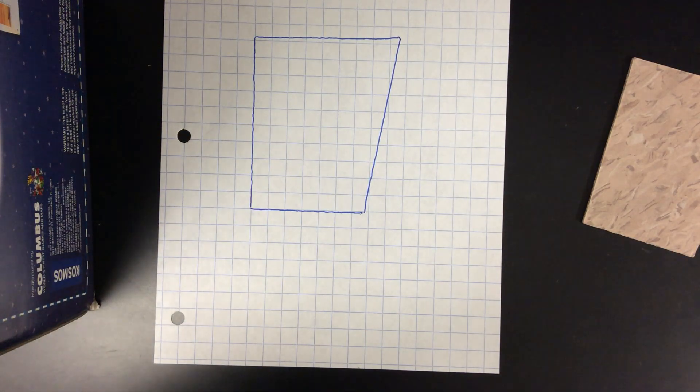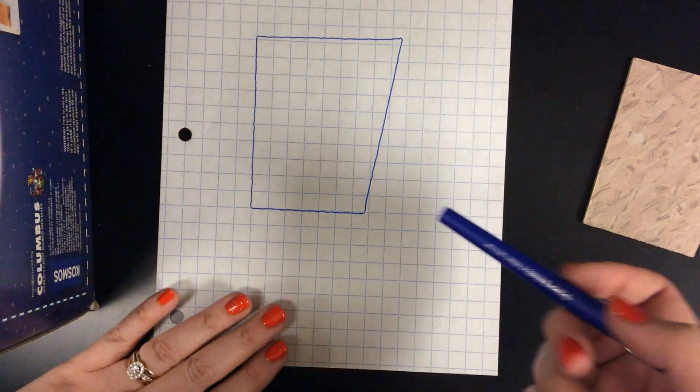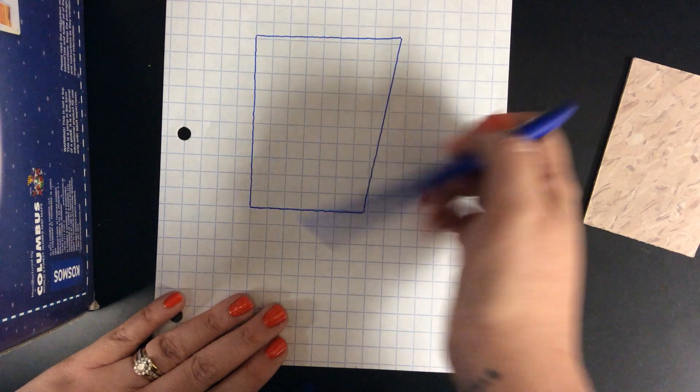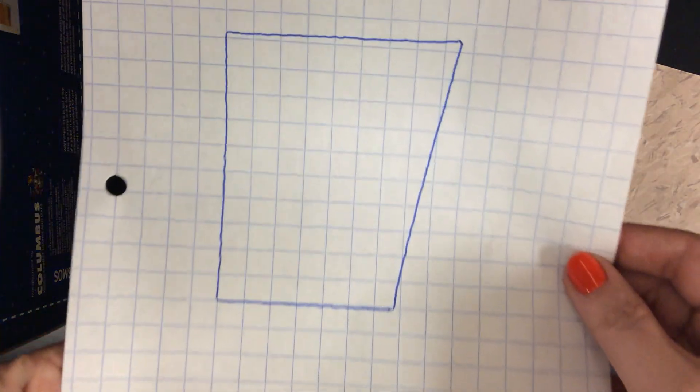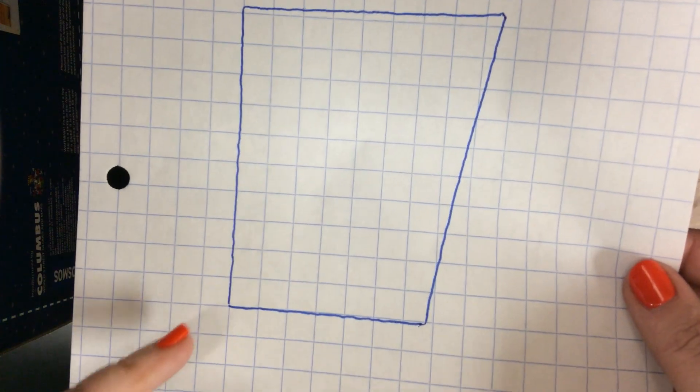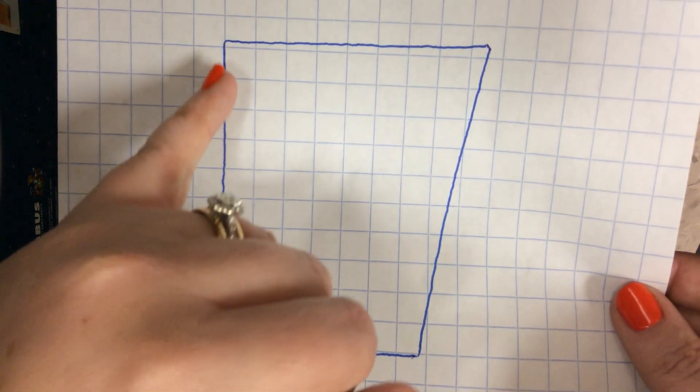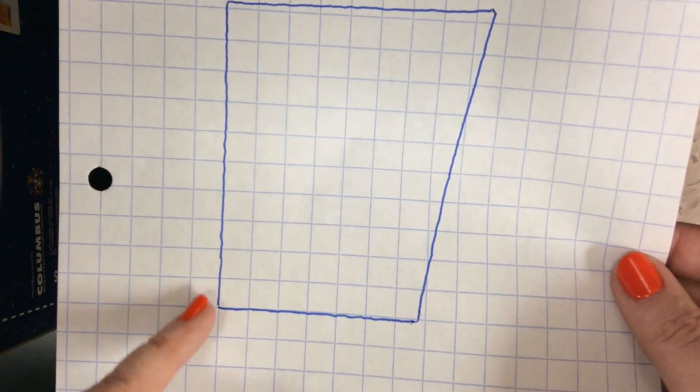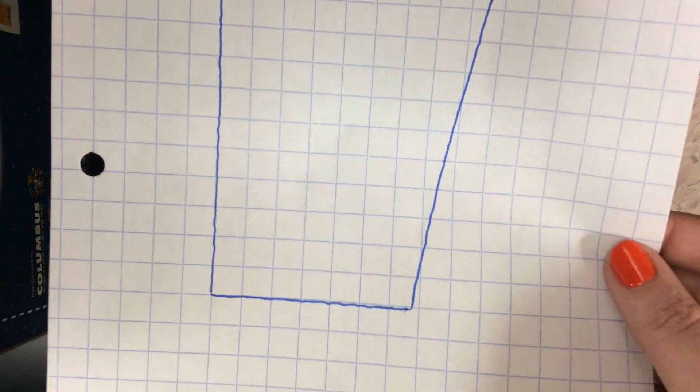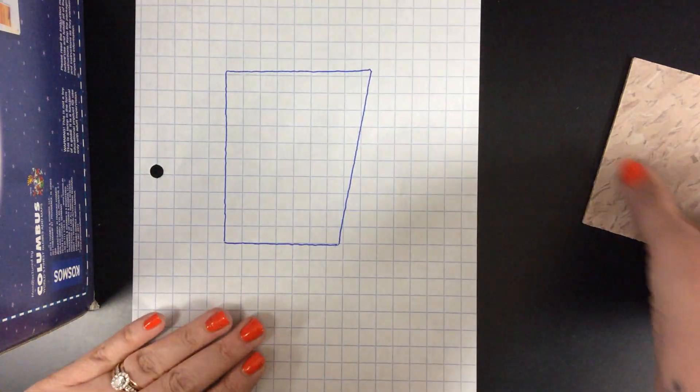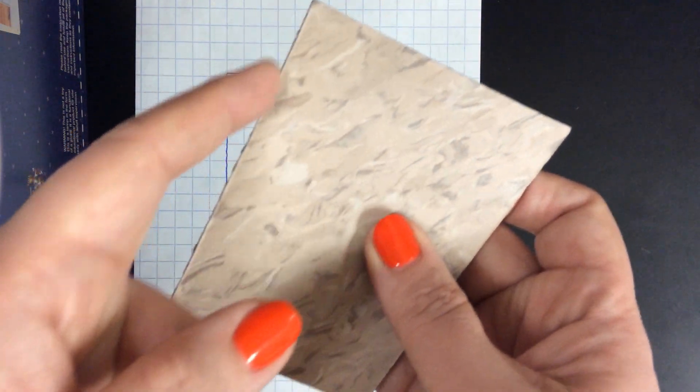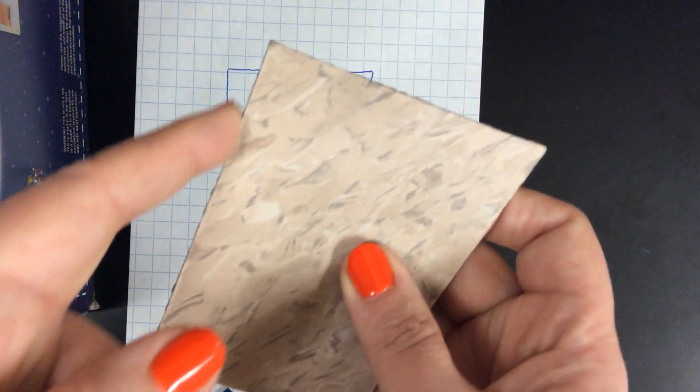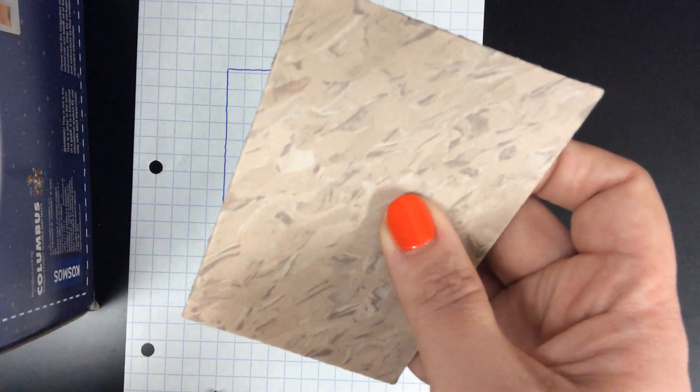A couple of things I want to point out that will be important later on. If you look really closely, and I'll actually lift it up so you can see better, you can see that as I've traced along the edge of the line it's not quite perfectly straight, and that's not because I was wobbling my pen. It's because the edge of the tile itself is kind of rough where it's been broken and cut.